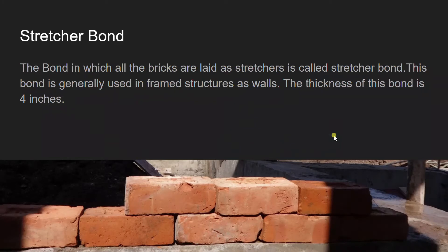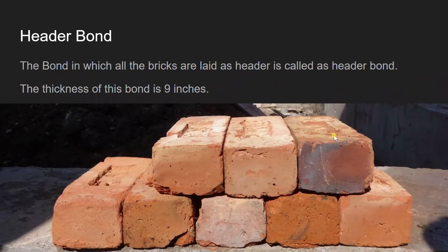Our first bond is stretcher bond. The bond in which all the bricks are laid as stretchers is called stretcher bond. This bond is generally used in frame structures as partition walls. The thickness of this bond is just 4 inches. We use this as a partition wall as there is negligible load on partition walls in a framed structure.